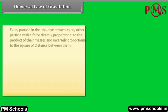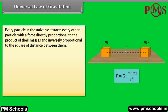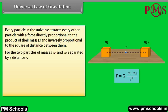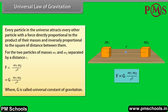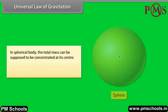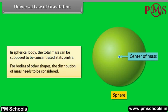According to Newton's law of gravitation, every particle in the universe attracts every other particle with a force directly proportional to the product of their masses and inversely proportional to the square of the distance between them. The direction of this force is along the line joining the two particles. For two particles of masses m₁ and m₂ separated by a distance r, F = G·m₁·m₂ / r². For a spherical body, the total mass can be supposed to be concentrated at its center.